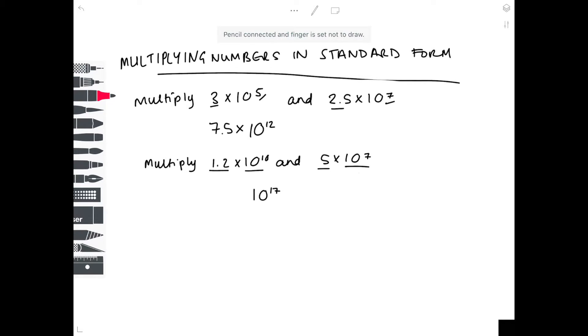Next up, we do 1.2 times 5. 2 times 5 is 10. 1 times 5 is 5, plus 1 is 6. And then reinsert that decimal point, so it becomes 6. So 6.0 times 10 to the 17 is our answer here.